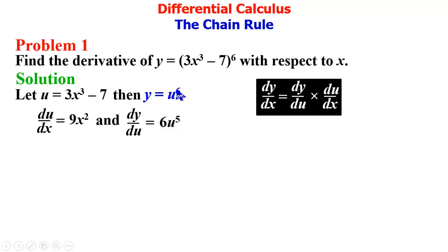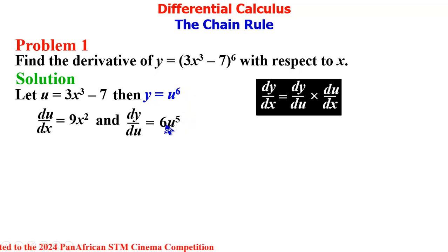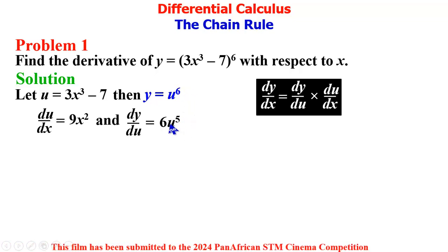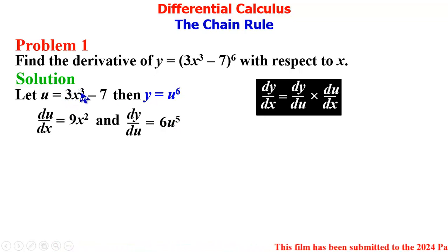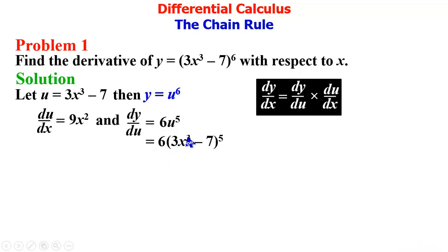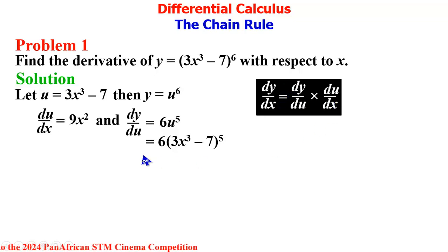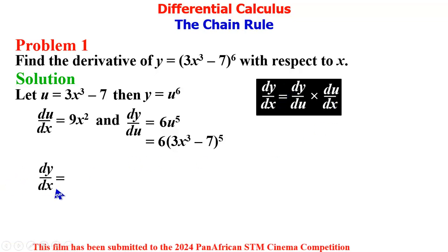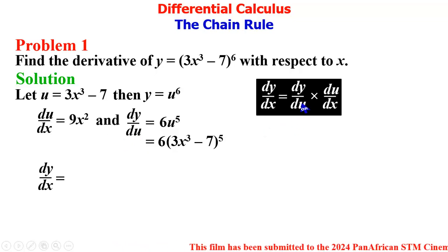dy/du = 6u⁵ — multiplying 6 by the entire function and reducing the index by 1. We then substitute back our u, since u = 3x³ - 7, so dy/du = 6(3x³ - 7)⁵. We then substitute into the chain rule formula so that dy/dx = dy/du × du/dx.